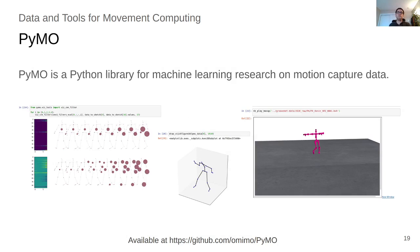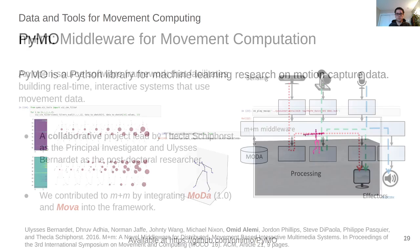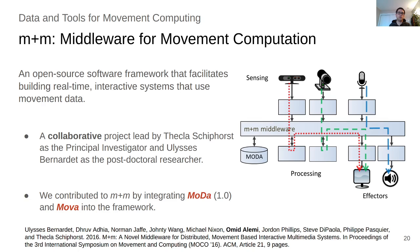Then we present PyMo, which is a Python library for machine learning research on motion capture data. The idea is to create a library that allows us to easily parse mocap data from different formats, perform a number of common pre- and post-processing algorithms, and visualize the data in 2D and 3D — all integrated into tools that are common for machine learning research, such as Jupyter notebooks. We also contributed to the M+M project, which is an open source software framework that allows non-technical users to build real-time interactive systems that use movement data.